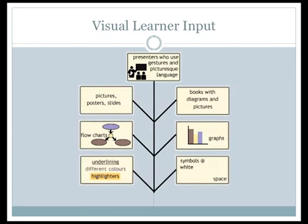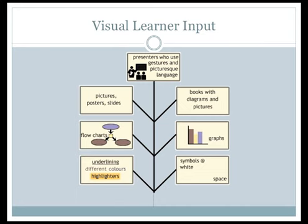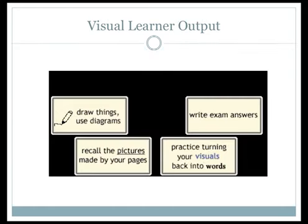Visual learner input. For our discussion, input describes how you take in information. When determining the best study strategies for yourself, keep in mind that there are ways you can modify how you take in information. For visual learners, please review the diagrams provided. Another example is to replace words with symbols or initials in your notes. Also, many students prefer to use highlighting and underlining in different colors to make notes more visually appealing. Which of these strategies is most appealing to you? An example of output is performing well on a presentation or test.